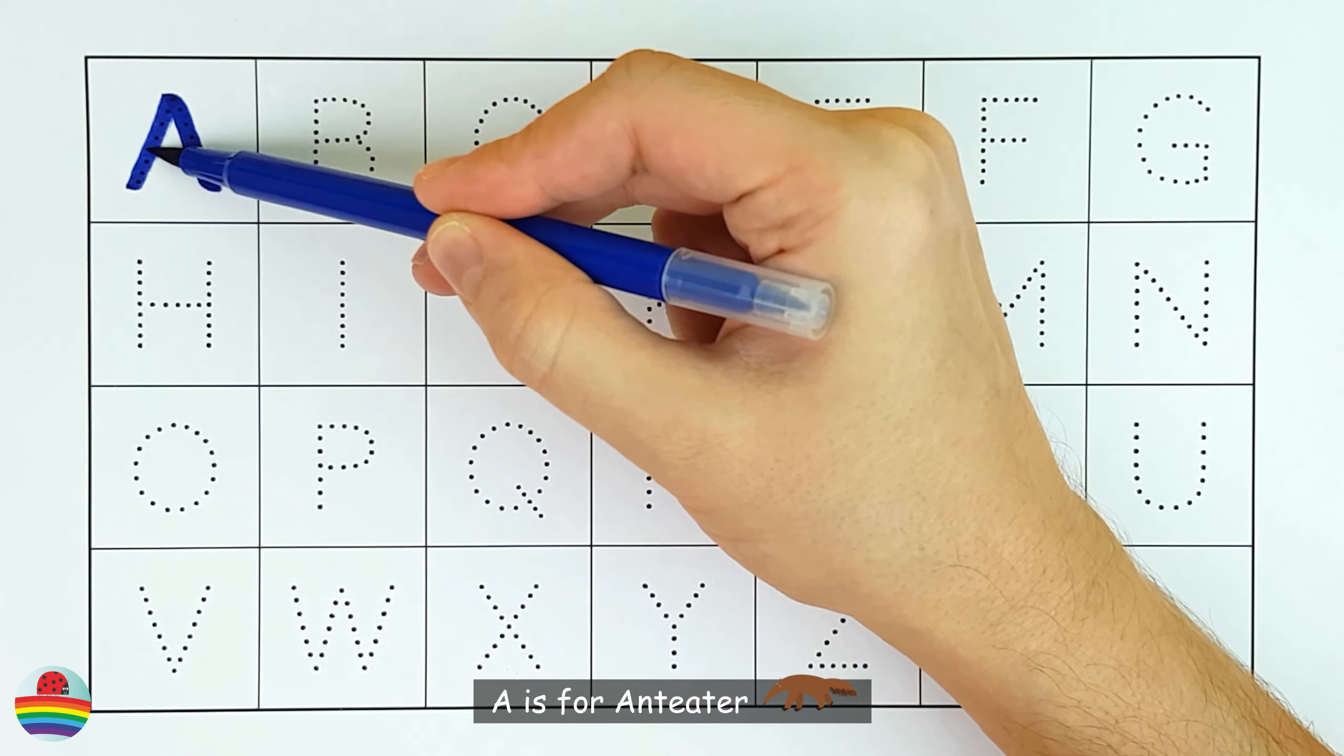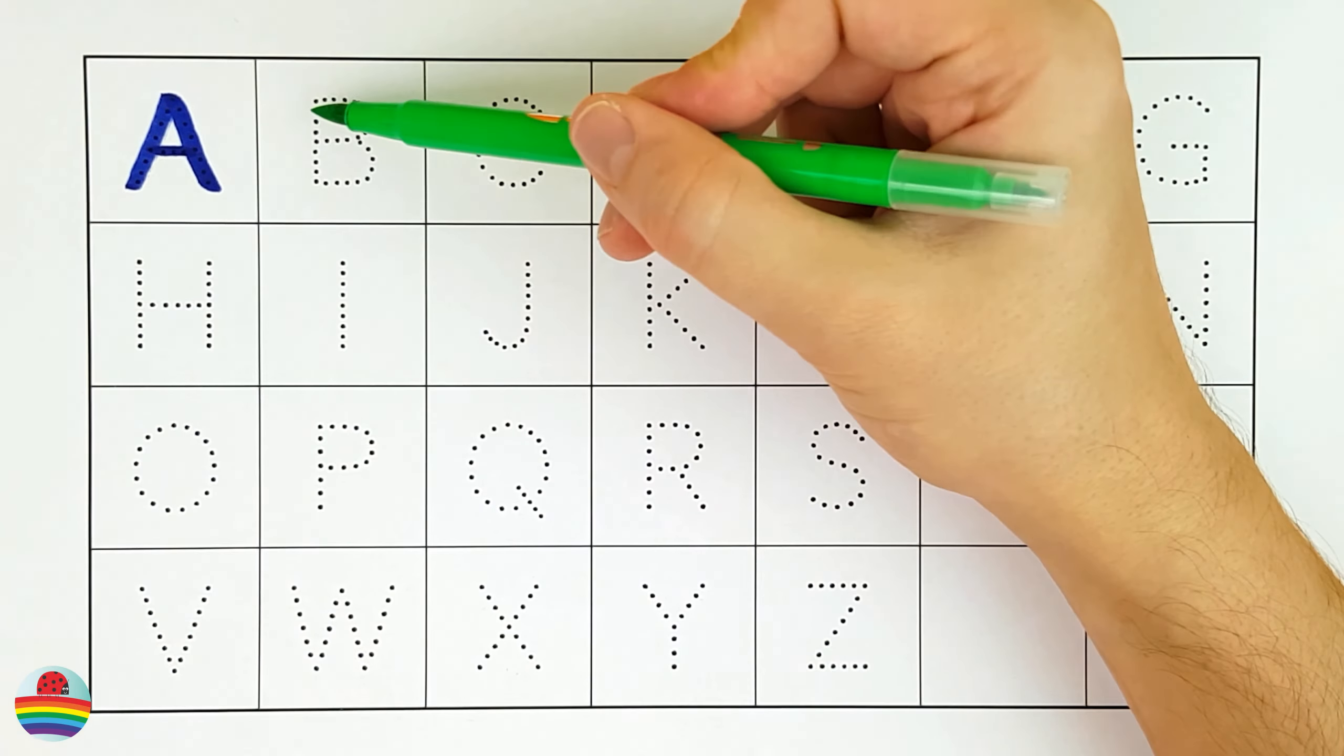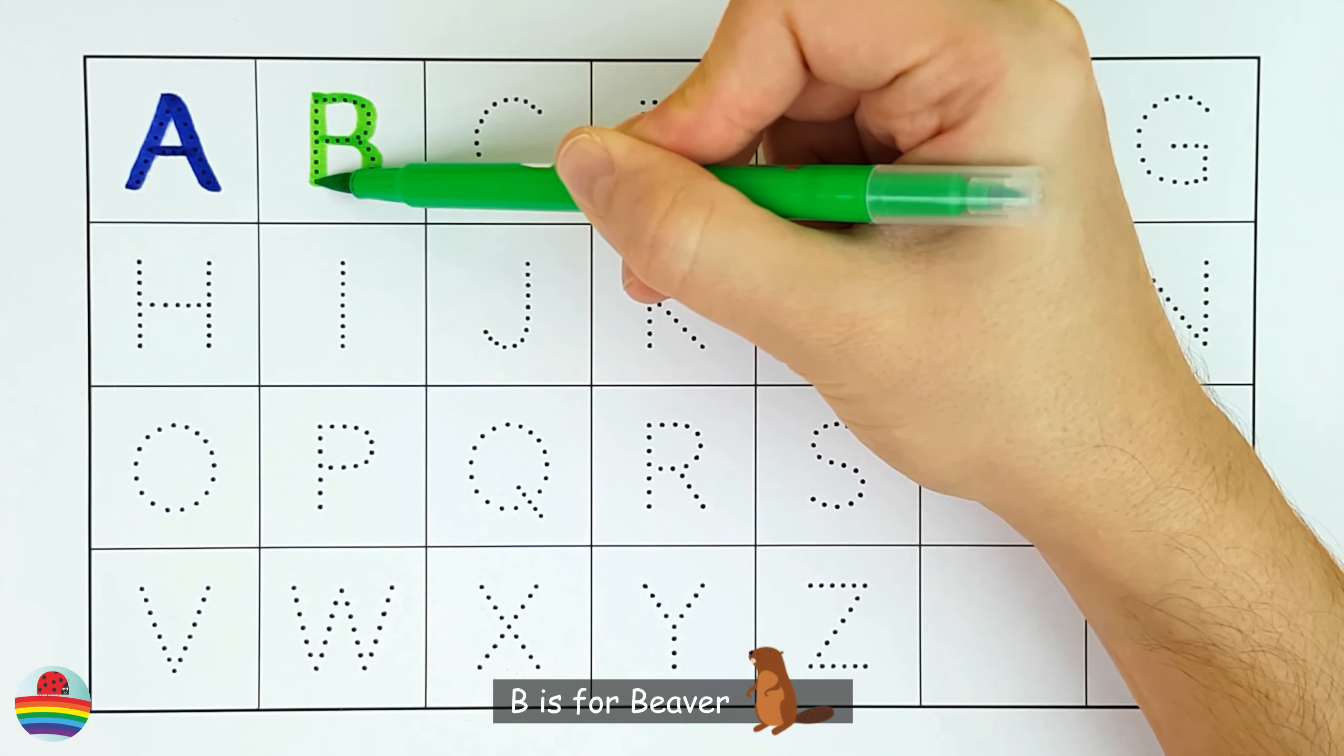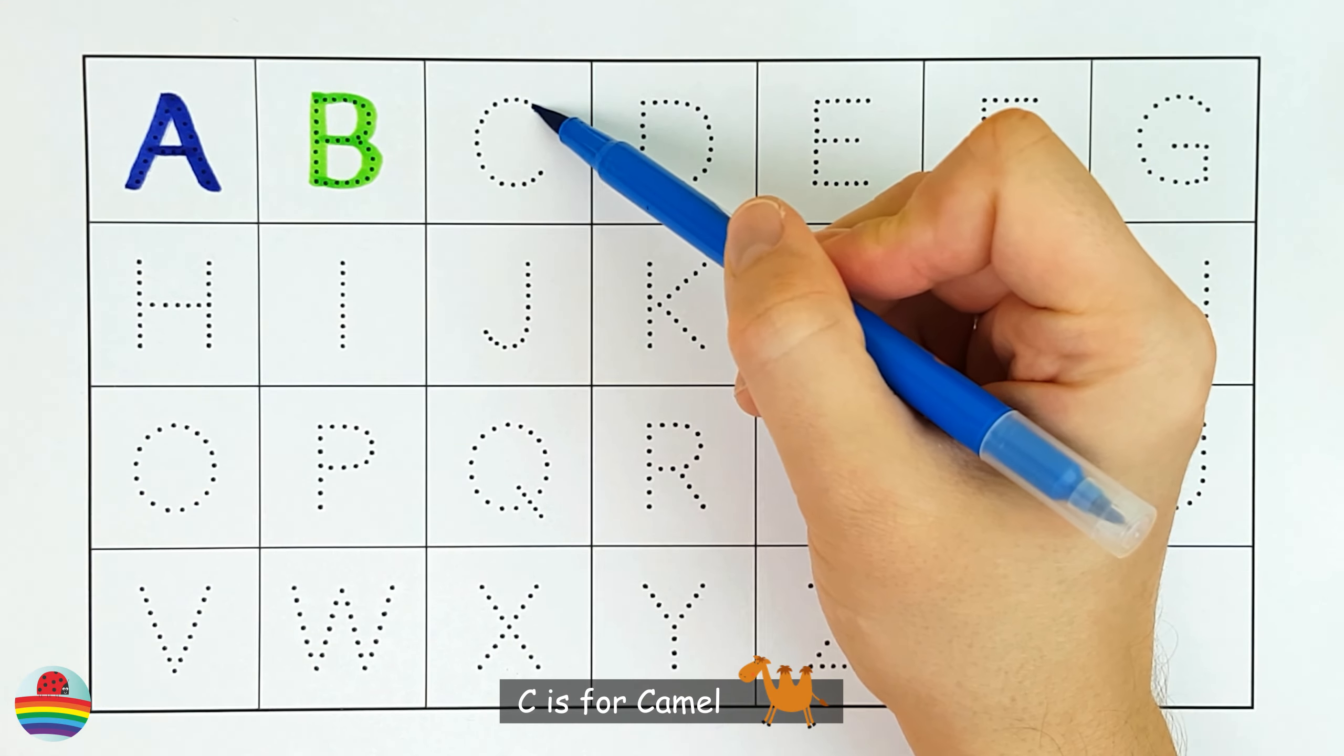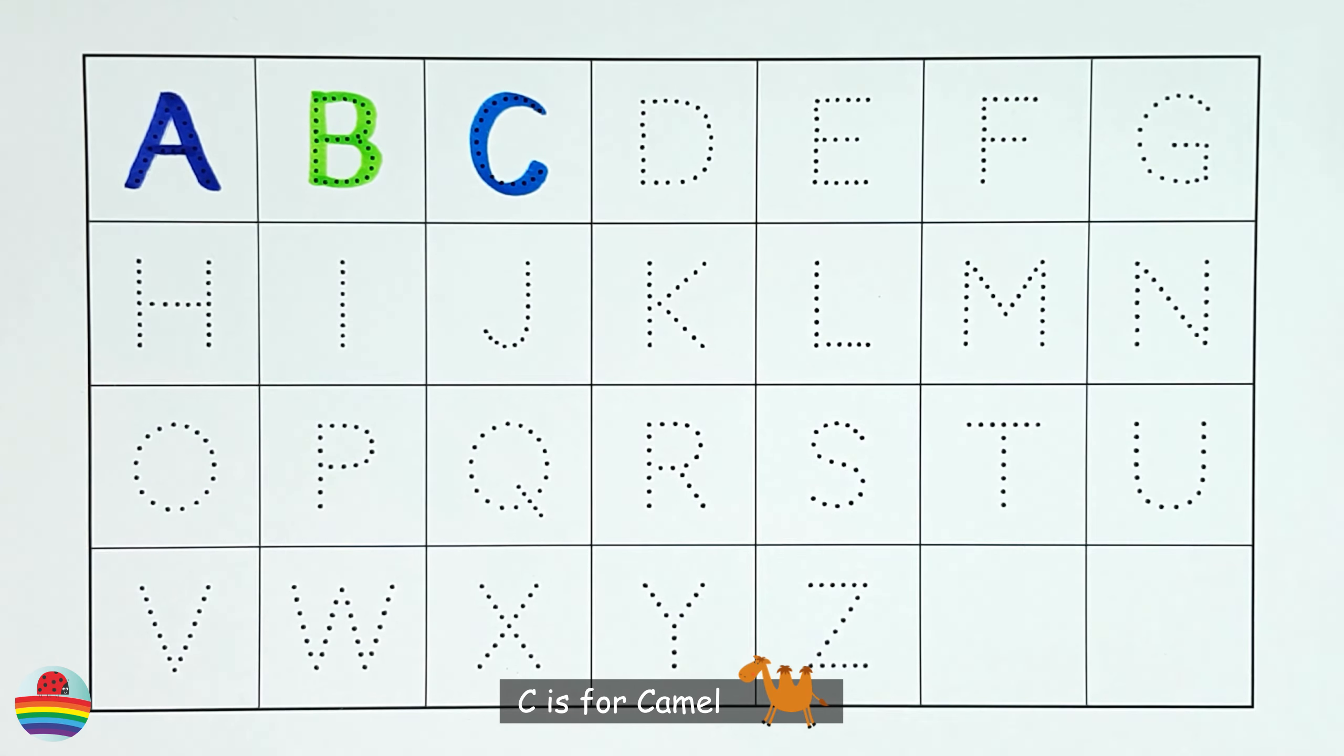A. A is for Anteater. A. B. B is for Beaver. B. C. C is for Camel. C.